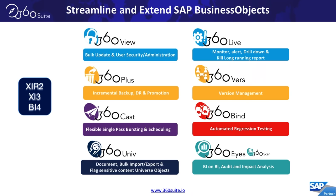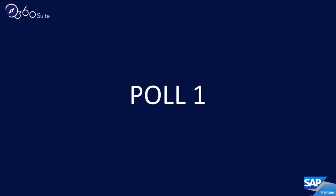The 360 Suite is made up of eight modules. I'm not going to go into each one right now, but we're going to dig into many of them as we cover the different regulations. We have over 600 clients worldwide and over 3 million end users leveraging the 360 Suite today — these are rock-solid solutions trusted around the globe to help manage Business Objects. We're going to show you more around the business cases for meeting compliance regulations.